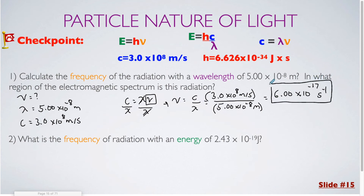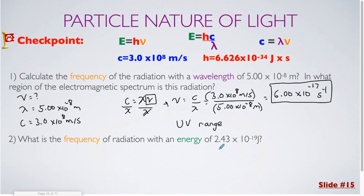There is another question associated with this where it asks: in what region of the electromagnetic spectrum is this radiation? You could look at this from either the perspective of the wavelength originally given or the frequency. If you look at the wavelength with an exponent of 10 to the negative 8th power, that would fall within the ultraviolet range. You would just look at the exponents along the chart to figure that out.